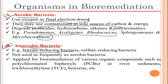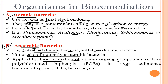Talking about anaerobic bacteria: some include nitrate-reducing bacteria and sulfate-reducing bacteria, which are always anaerobic in nature. These are not used as frequently as aerobic bacteria. They are applied for bioremediation of various organic compounds such as polychlorinated biphenyls (PCBs) in river sediments, trichloroethylene, and benzene.